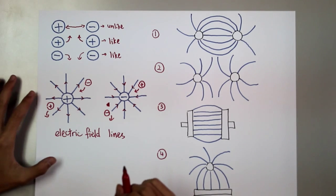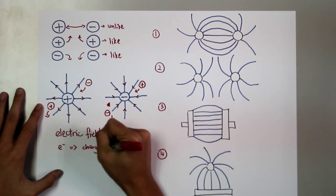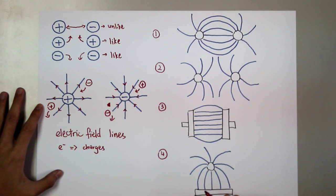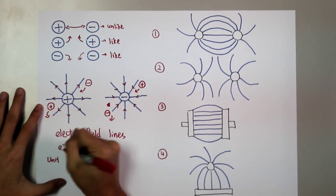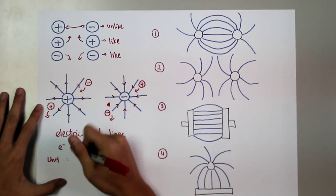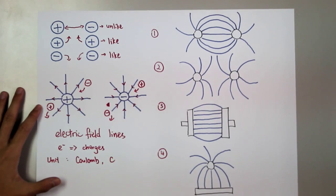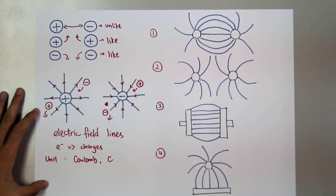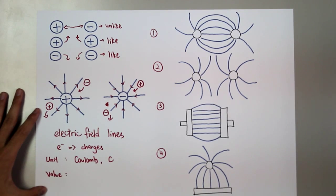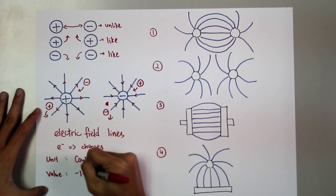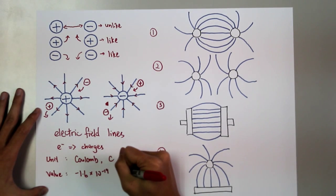As we all know, electrons carry charges. The unit for charges is Coulomb, which is represented by the capital letter C. For each electron, the value is negative 1.6 times 10 to the power of negative 19 Coulomb.